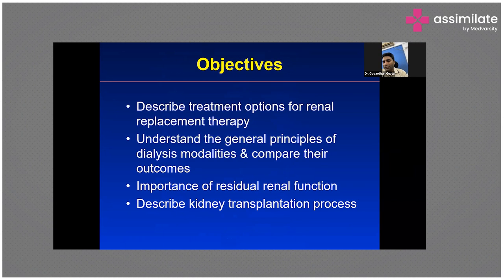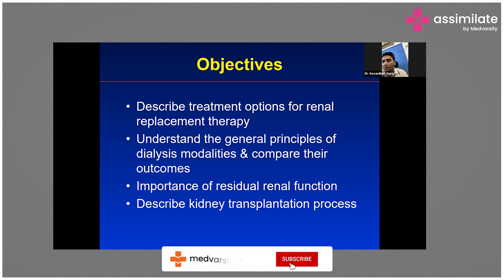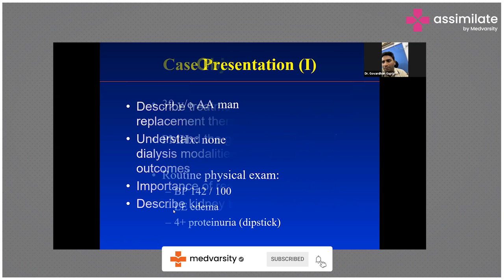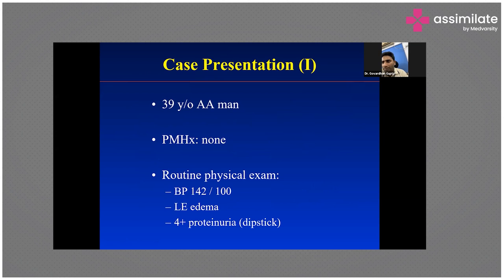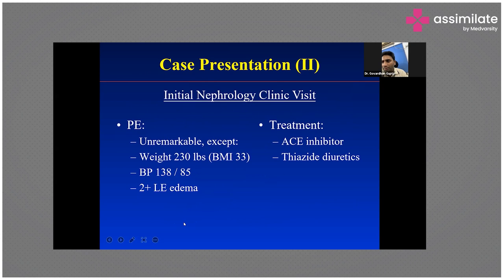Here is a typical case presentation: a 39-year-old gentleman without diabetes, with hypertension, who started having leg edema and proteinuria 4+ on dipstick. He was also obese, and was initially treated with ACE inhibitors and thiazide diuretics because of the edema. His GFR was around 40 with a creatinine of 2.4.